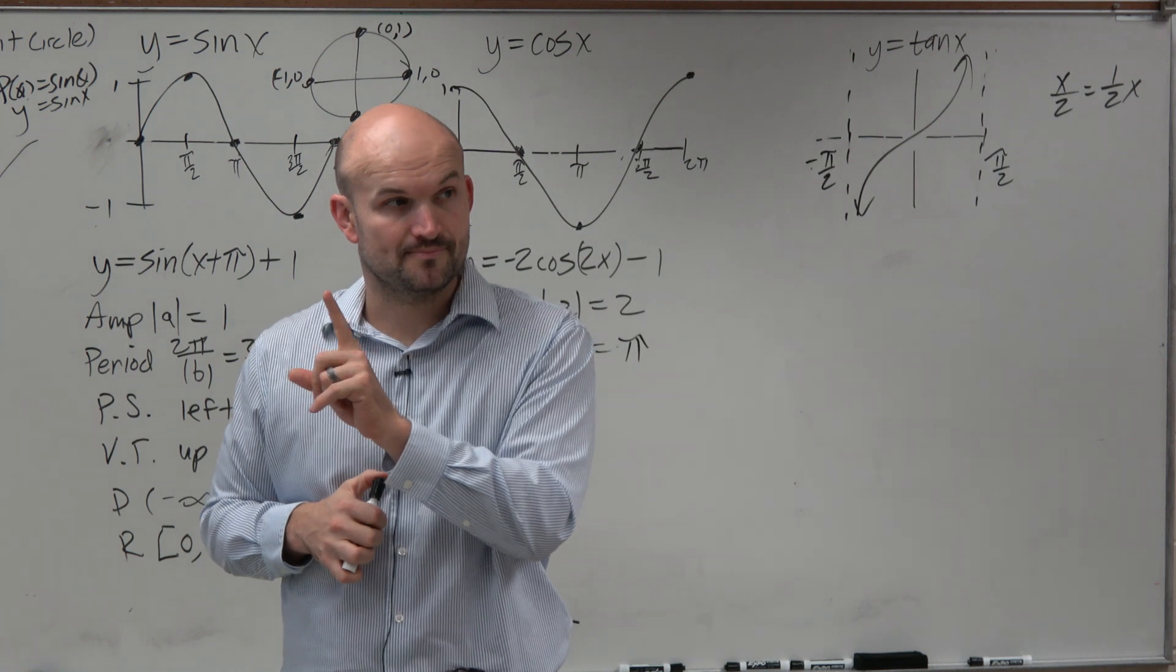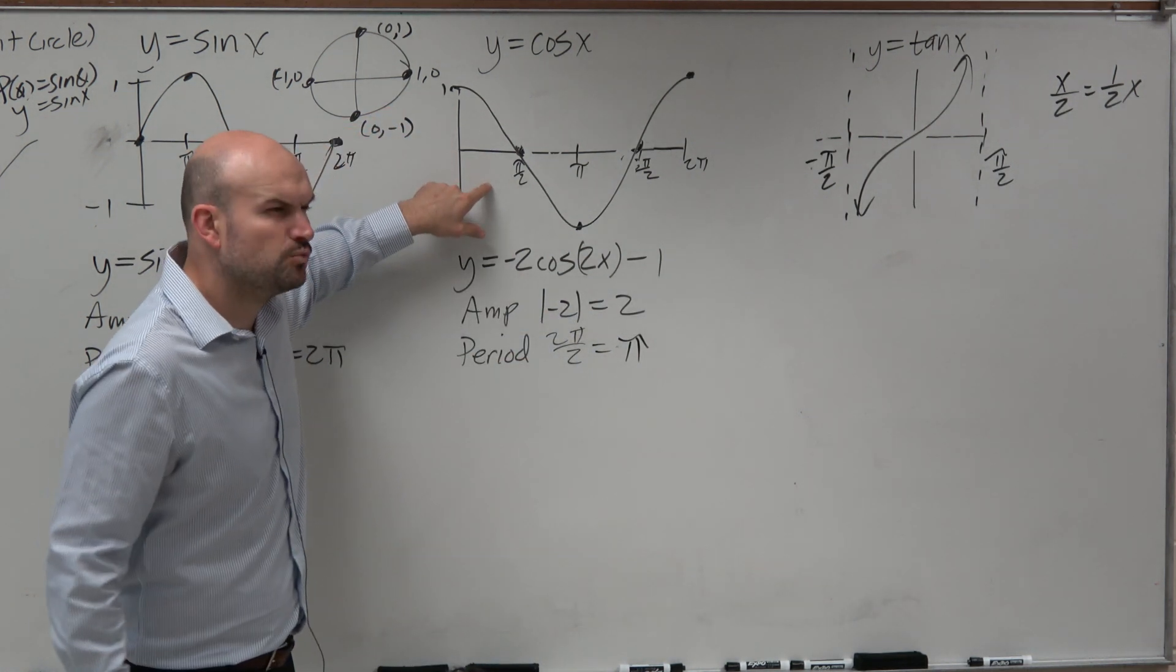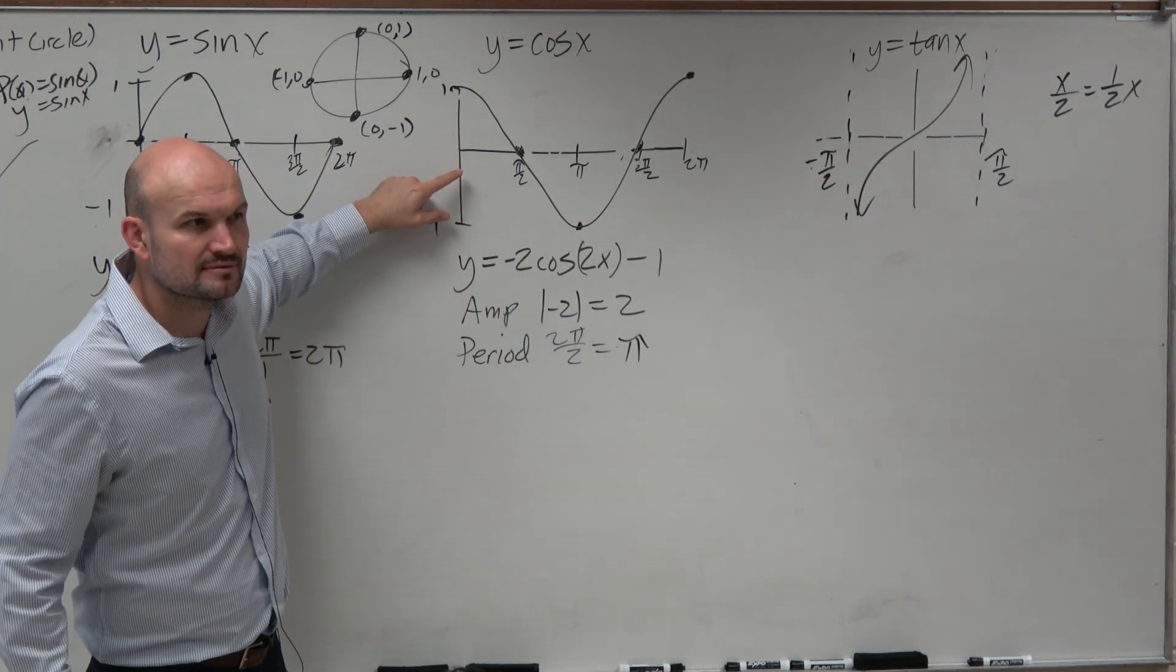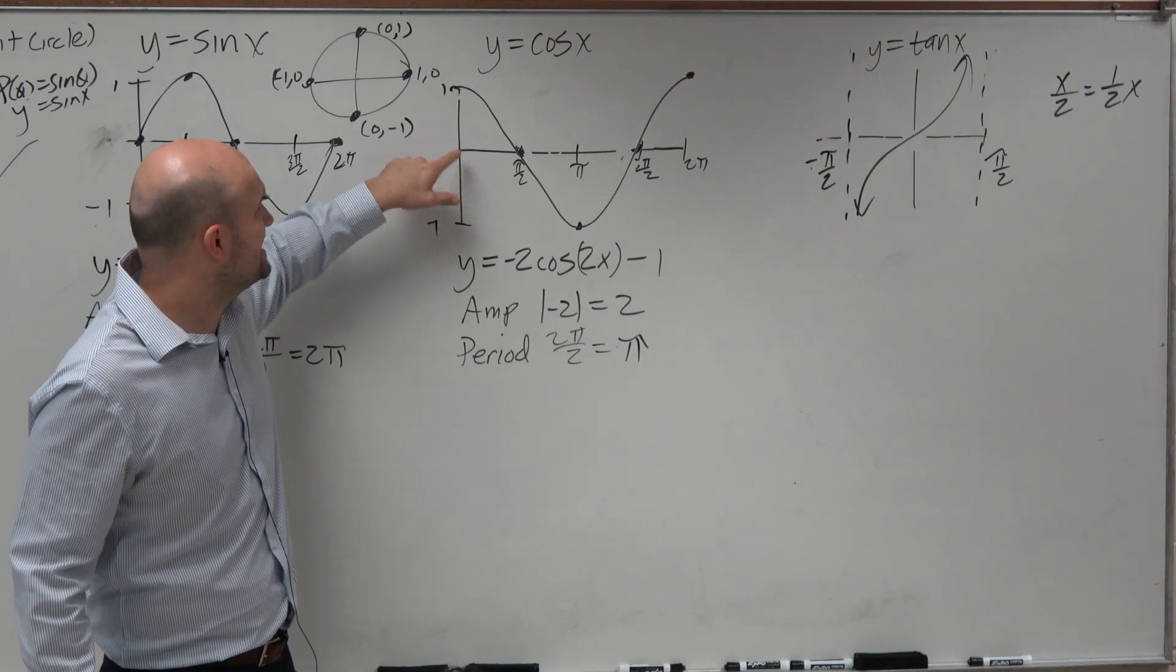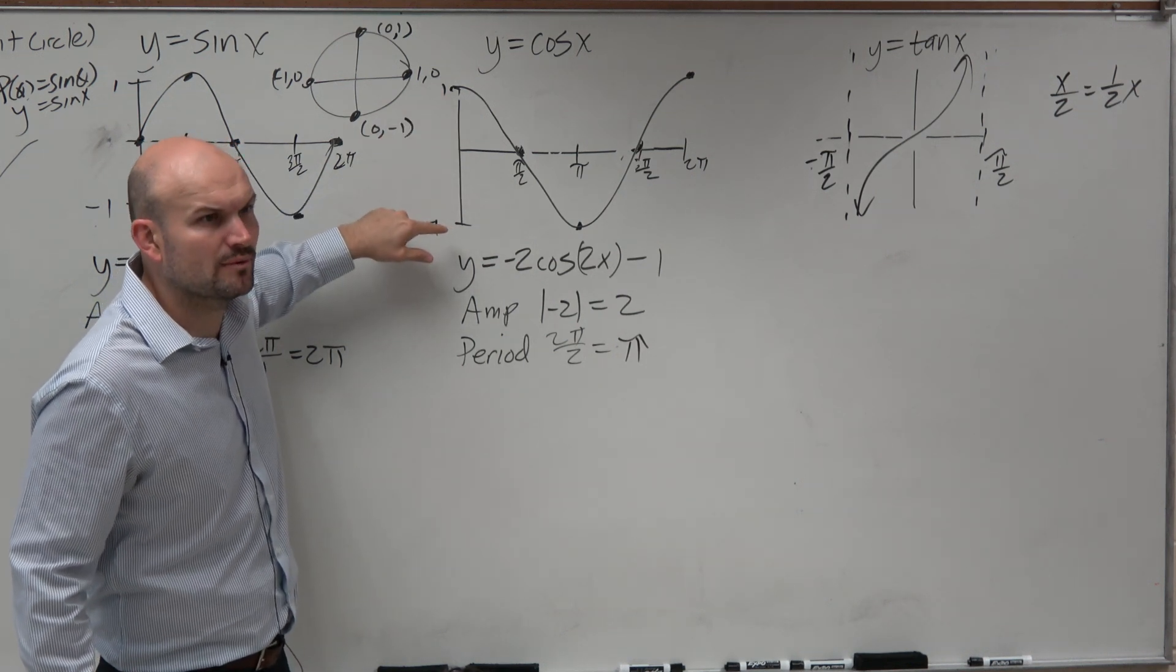Now, quick little thing I forgot to mention. Does 1 and negative 1 make sense for this graph? Like, why is the maximum and the minimum negative 1 and 1?